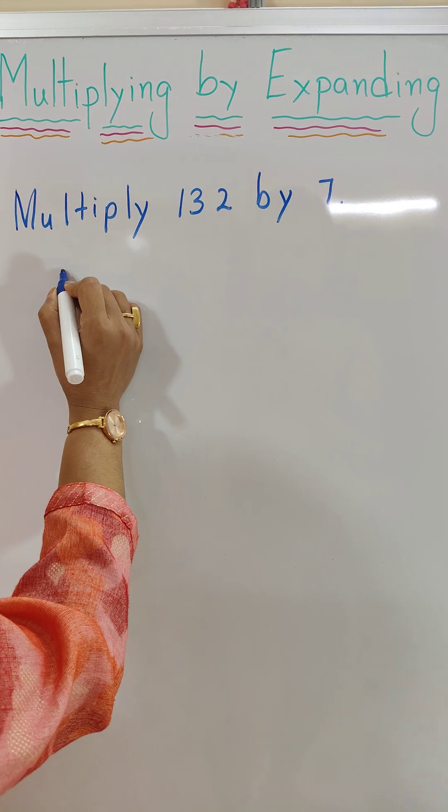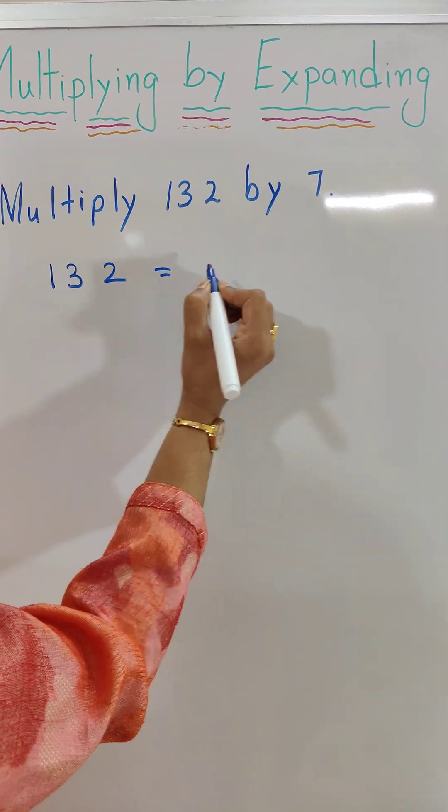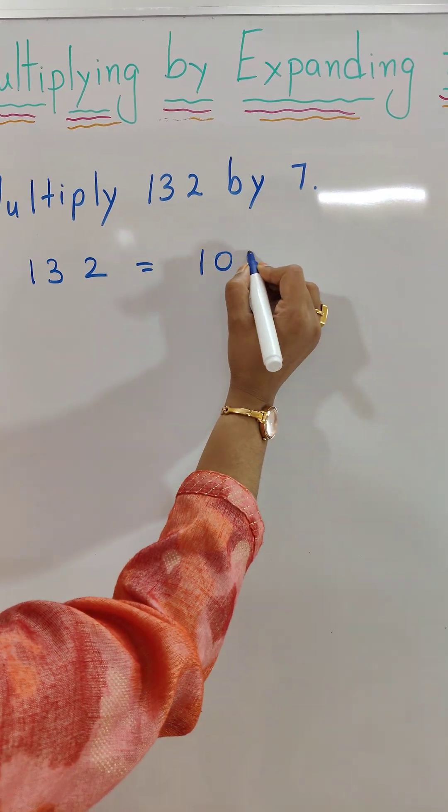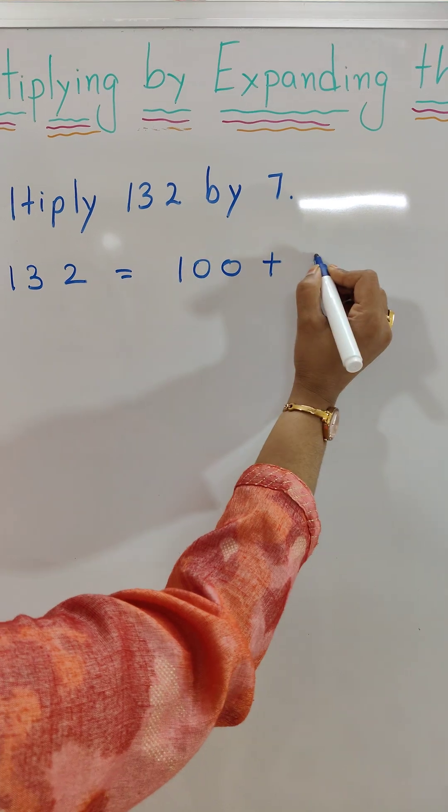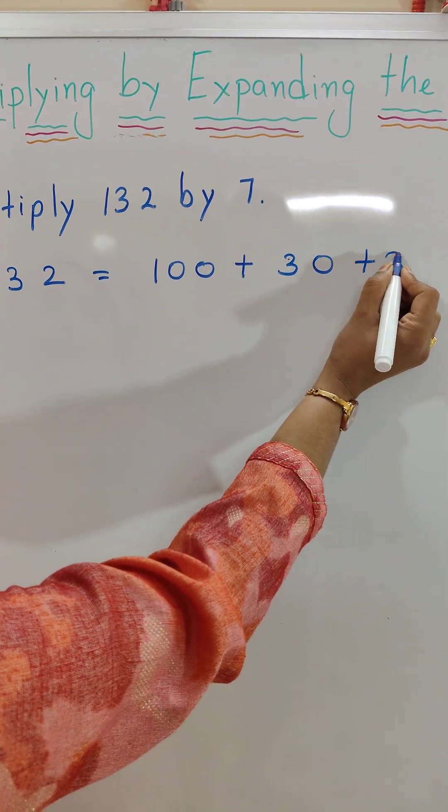So 132, when we expand 132, we get 100 plus 30 plus 2.